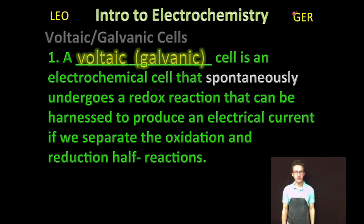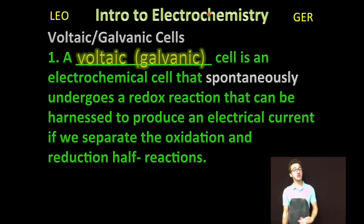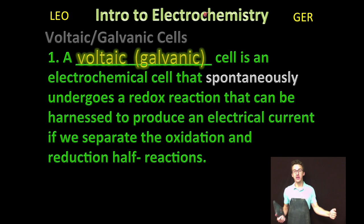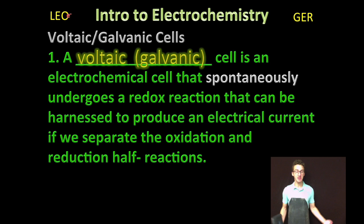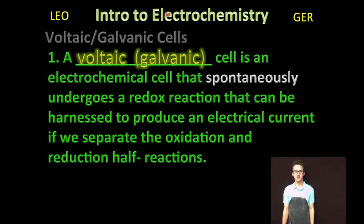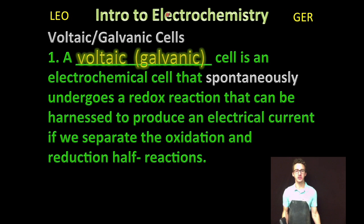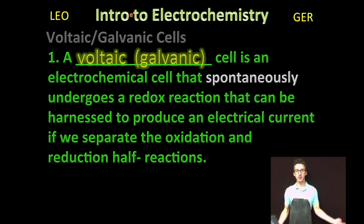There are two types of electrochemical cells you need to be comfortable with. One is a voltaic cell, also known interchangeably as a galvanic cell - they mean the same thing. This is an electrochemical cell, a redox reaction, that occurs spontaneously. We can harness that flow of electrons to produce an electrical current if we separate the oxidation and reduction half reactions.